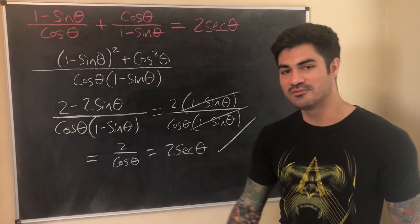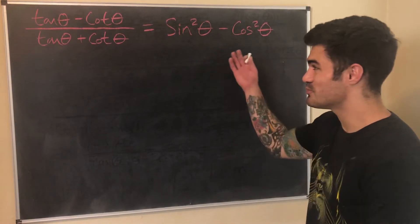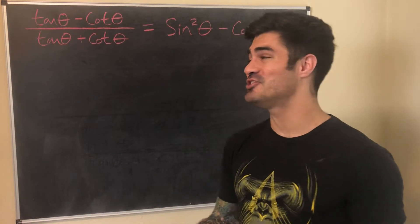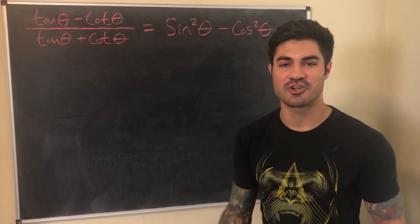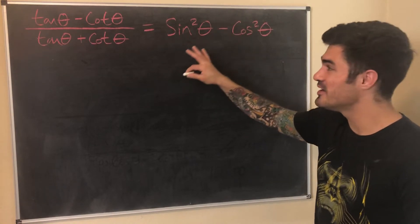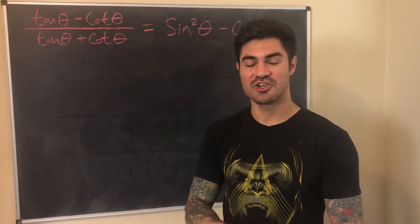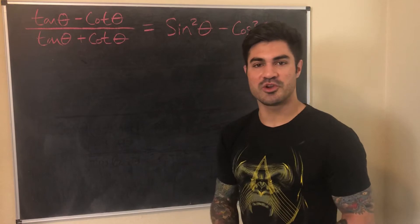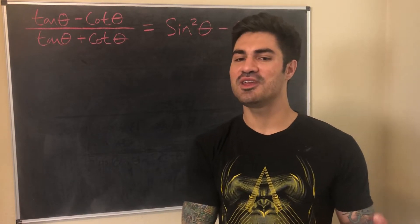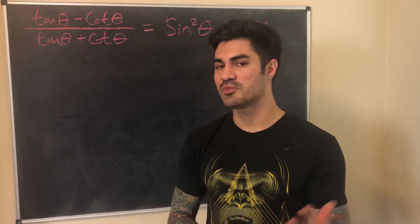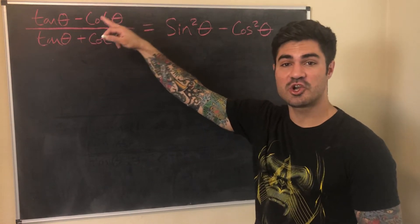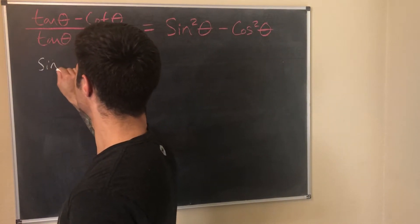In the last example the left side is clearly more complicated, and this introduces my final strategy: rewrite everything in terms of sine and cosine. This works best when one side is expressed in sine and cosine while the other uses tangent, cotangent, secant, or cosecant. It also works as a last resort when other strategies haven't worked — it may be more tedious but it almost always gets you there. Recall: tanθ = sinθ/cosθ and cotθ = cosθ/sinθ.